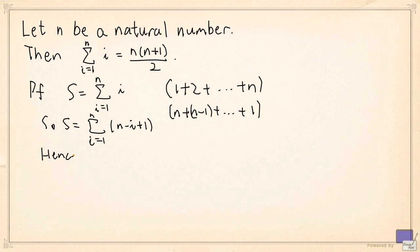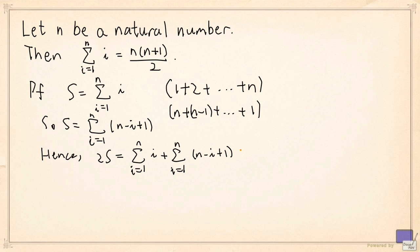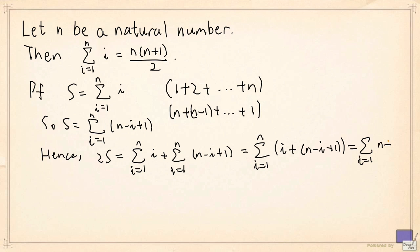Now we are going to add both expressions. So 2 times s is equal to this sum plus this sum. The two summations range over the same values of i, so we can combine them: each term is i plus n minus i plus 1. Simplifying this, we get n plus 1. So this is the sum of n plus 1 as i ranges from 1 up to n.